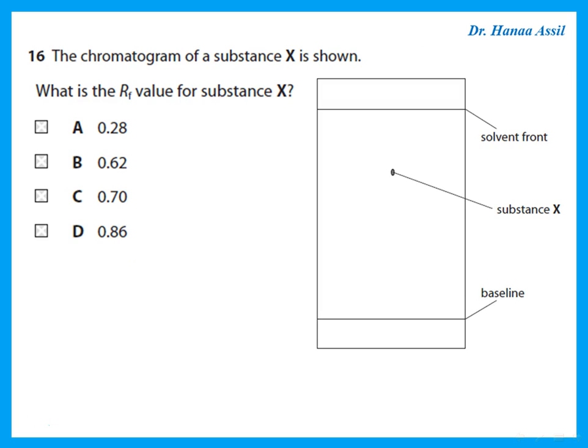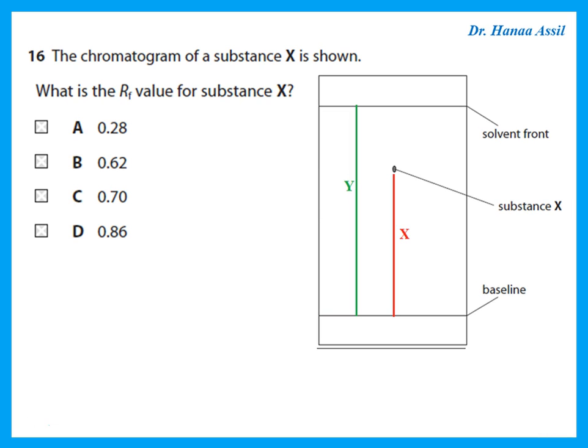Question 16 shows a chromatogram of substance X and asks for the RF value. RF is calculated as the distance travelled by the spot from the baseline divided by the distance travelled by the solvent front from the baseline. Looking at the chromatogram, the spot is approximately three-quarters of the way up the paper, giving an RF value of approximately 0.7.